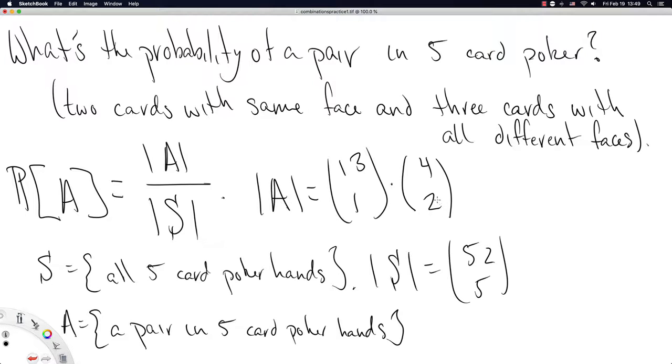That's only two of our five cards. For the remaining three, there are 12 other faces, and we specify three of those. Each of those three faces has four cards, and we want one of each. We repeat that three times.